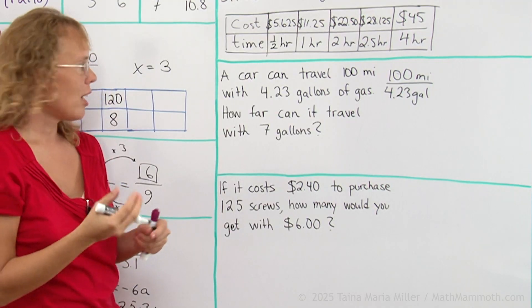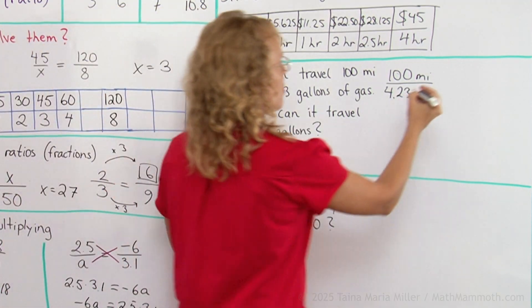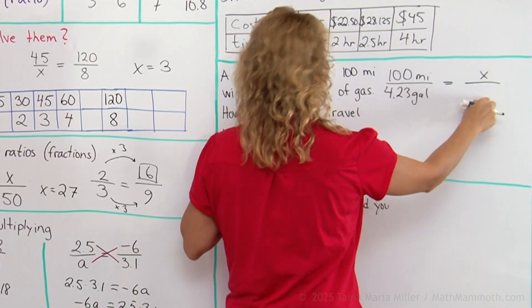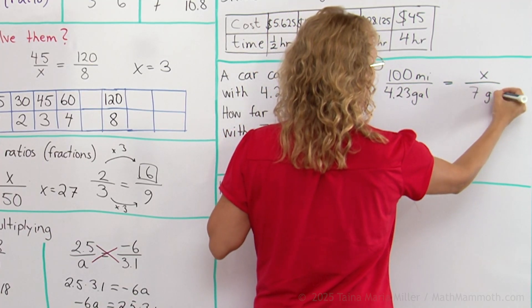And then in the other ratio we have the unknown. We just know the gallons, but we don't know the miles. So this can be an unknown amount of miles to 7 gallons.